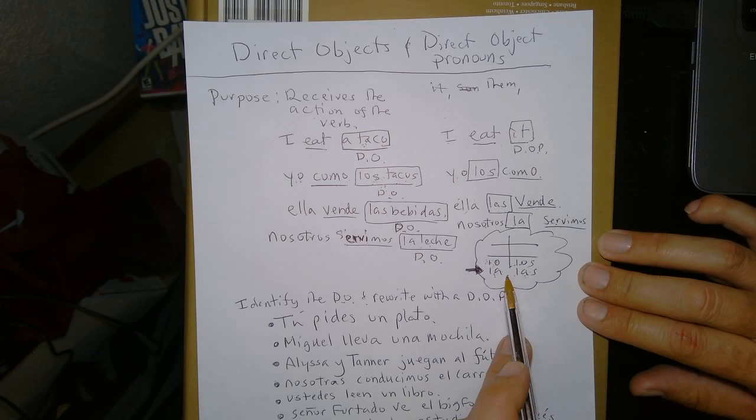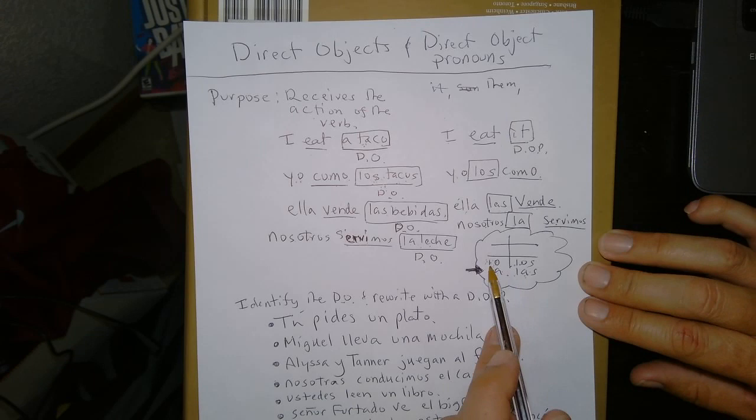Single and plural. We have four direct object pronouns. Lo, la, los, and las. Why do we have four? Tell me. That's right.